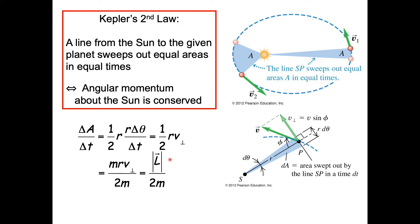If we multiply by M and divide by M, we can rewrite this as MRV perpendicular divided by 2M, which equals the angular momentum L divided by 2M. That 2M is a constant. The mass isn't changing. So this whole term has to be a constant precisely because in the absence of a torque, the angular momentum is conserved. So Kepler's law is a consequence of conservation of angular momentum.